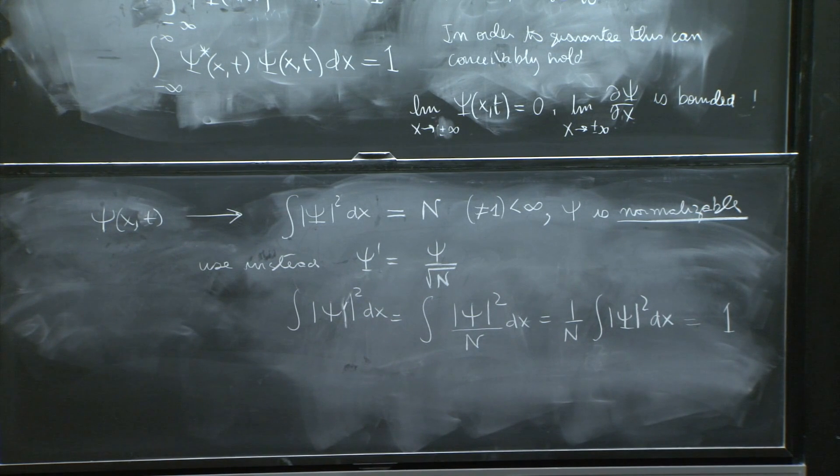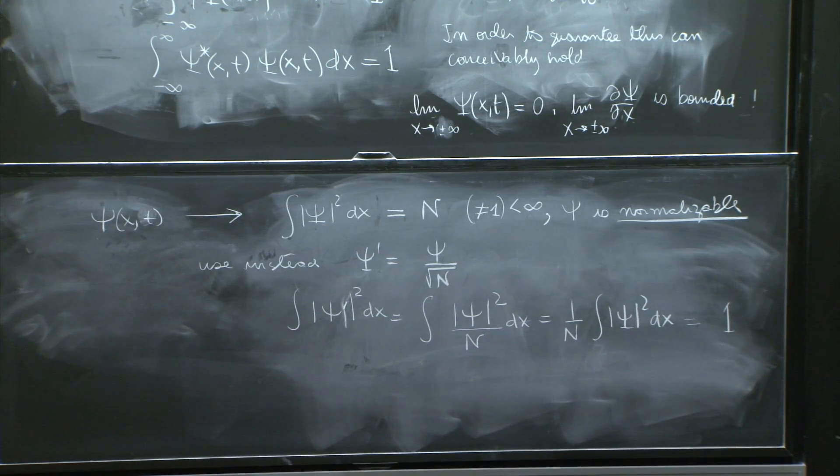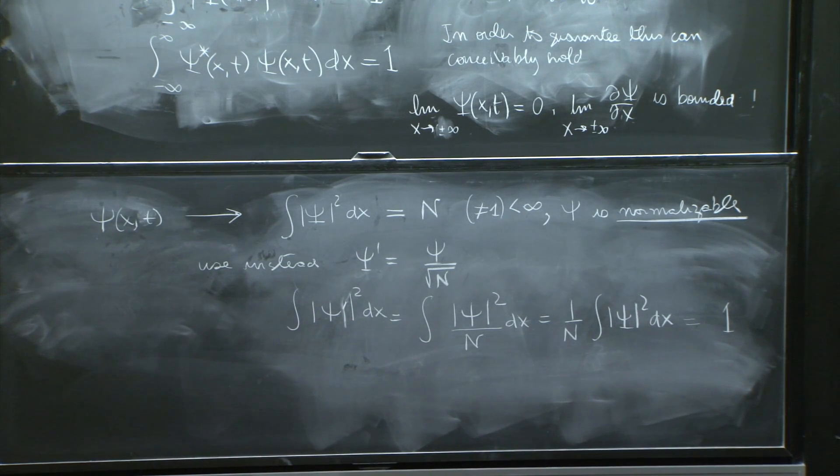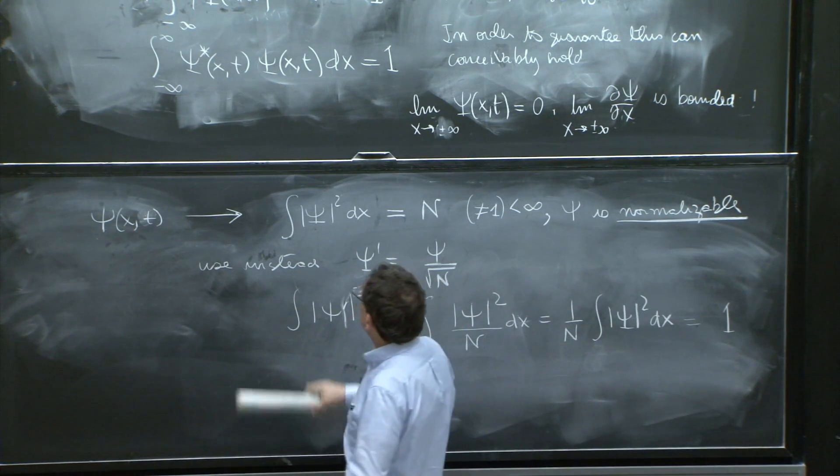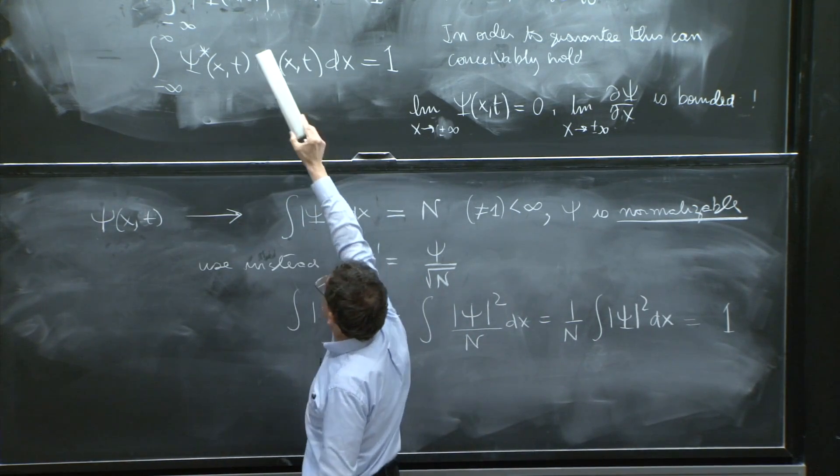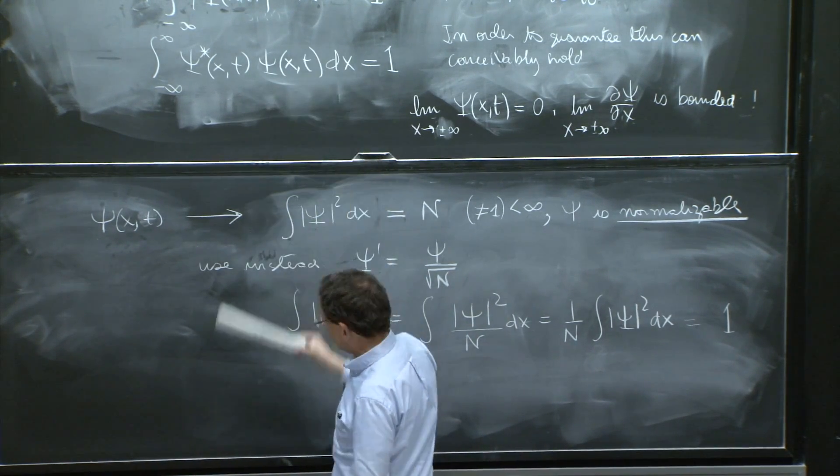So those two words sound very similar but they're a little different. One is normalizable, which means it has integral of psi squared finite. And normalized is one that already has been adjusted to do this and can be used to define a probability distribution.